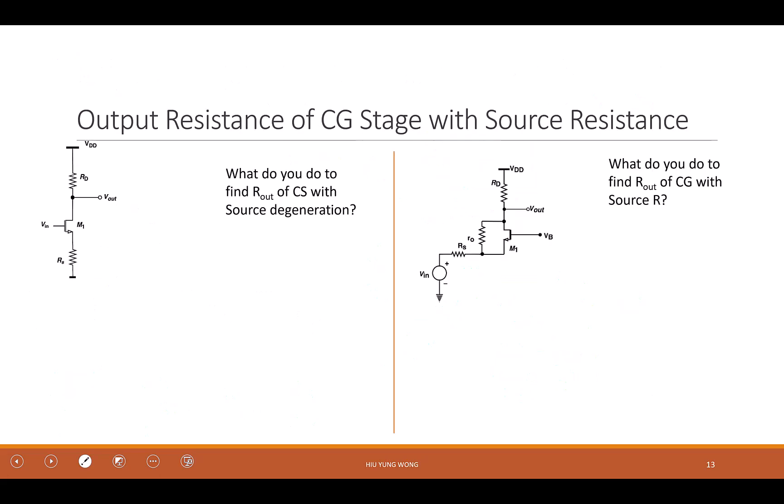Now, the last thing we want to talk about is the output resistance of a common gate with source resistance. Let's look at the left. What type of amplifier is this? Yeah, common source with degeneration. Because the input is at the gate, output is at the drain. What is the output impedance of this circuit? First of all, how do we find it? R out equals to V out divided by I out when V in equals to zero.